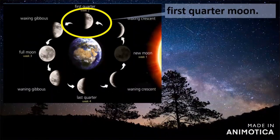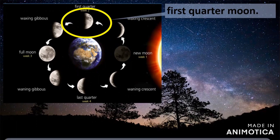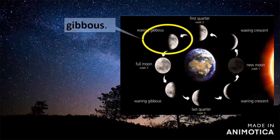The first quarter moon is when half of the moon's disk is illuminated. From earth, we are looking at the sunlit side of the moon from off to the side. The moon continues to wax, and once more than half of the disk is illuminated, it has a shape we call gibbous.